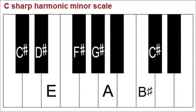The notes of the C-sharp harmonic minor scale are C-sharp, D-sharp, E, F-sharp, G-sharp, A, and B-sharp.